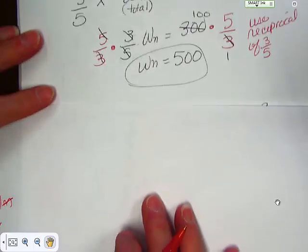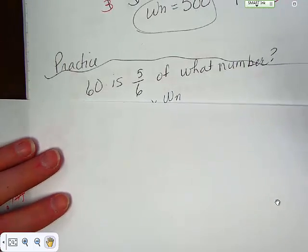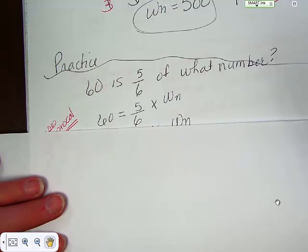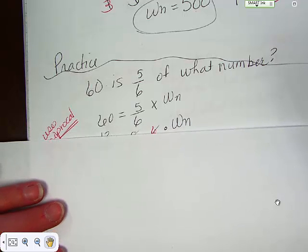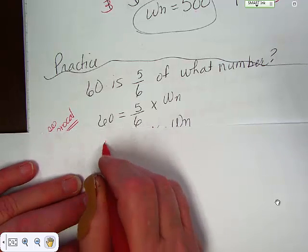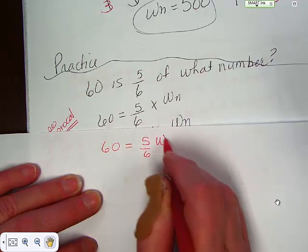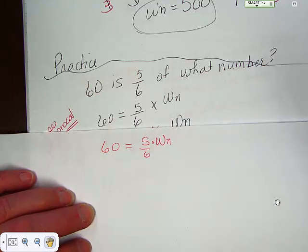Now we're going to do a little practice, so that you kind of get some practice with this. So 60 is five-sixths of what number? 60 equals five-sixths times what number. Okay, so we have 60 equal five-sixths times what number. Remember, there's just a teeny tiny little sign in there that says that's multiplication.